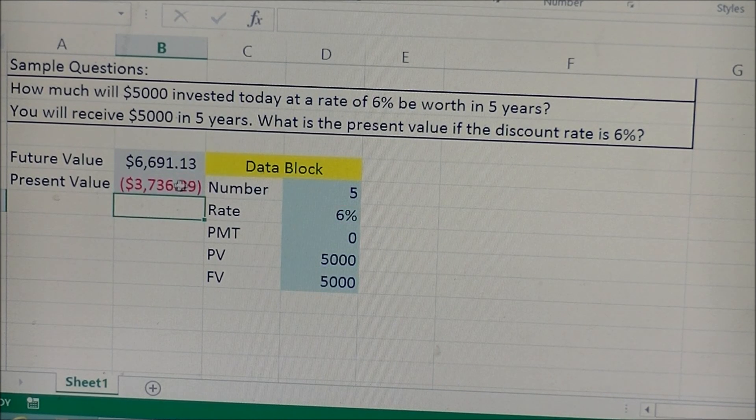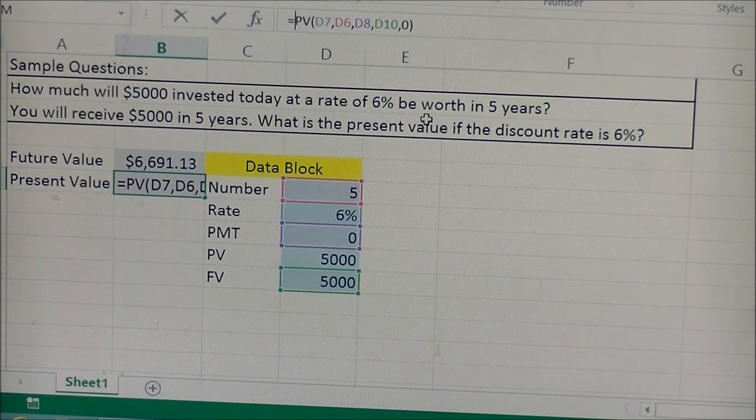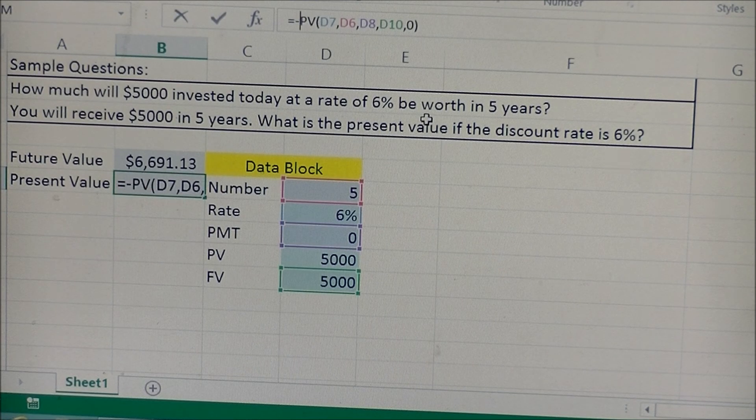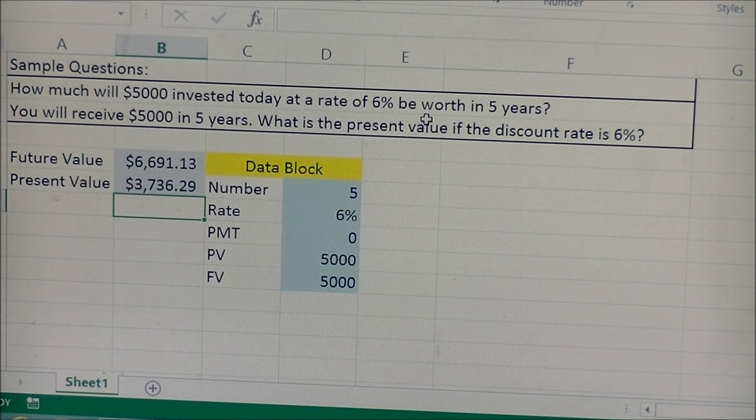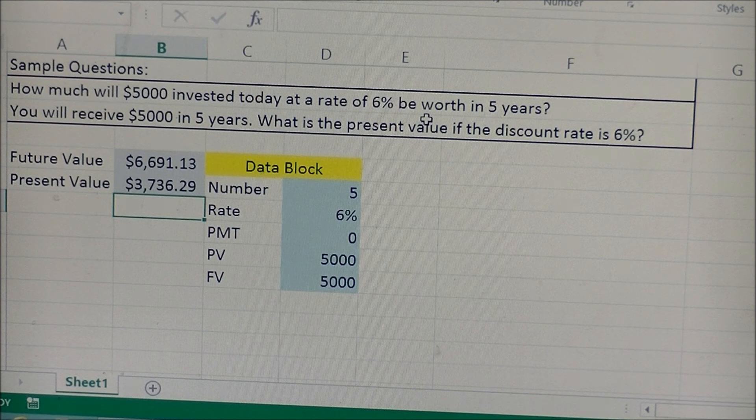And again, we get a negative number, so we will go ahead and go between the equal sign and the present value, and put in a negative sign. And so, what it's telling us is the amount of money in five years, if we're going to get a payment for $5,000, in today's dollars, it is worth $3,736.29.